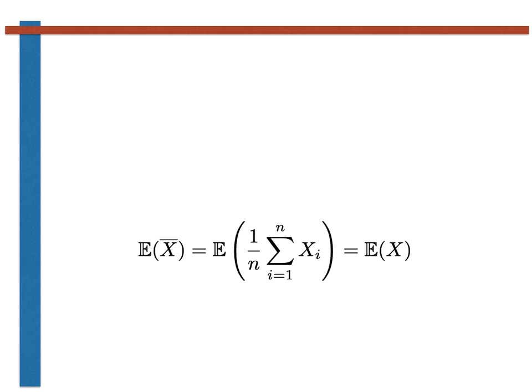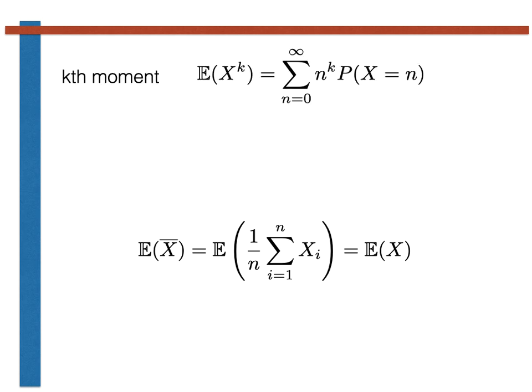Now we know that the true values for the moments of the distributions are given by the expression at the top of this slide. We have seen how we can use this expression, or more accurately the moment generating function, to generate expressions for the expectations and variance, or any other moment of the distribution, for our various types of random variable. The expressions we have found are simple functions of the parameters of the random variable.